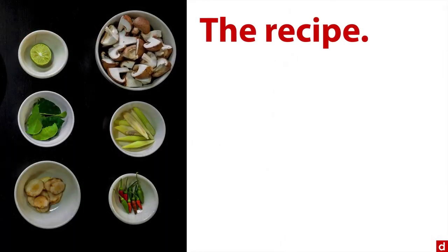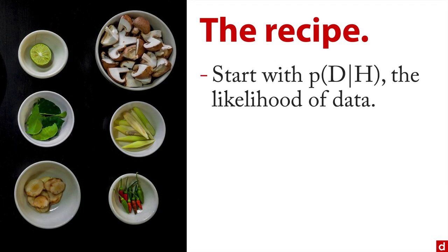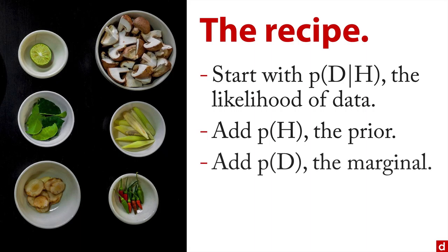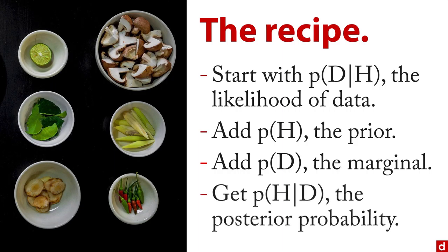Here's the general recipe for how this works. You start with the probability of the data given the hypothesis, which is what you get from the likelihood of the data — you also get that from a standard inferential test. To that you need to add the probability of the hypothesis, or the cause, being true; that's called the prior or prior probability. You also add the probability of D, the probability of the data — that's called the marginal probability. Then you combine those in a special way to get the probability of the hypothesis given the data, or the posterior probability.